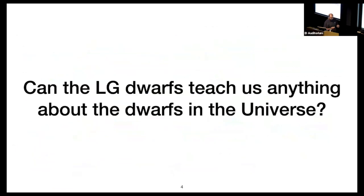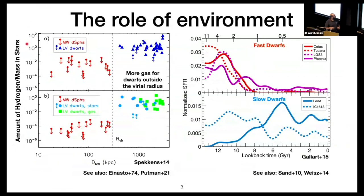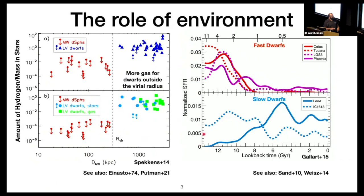Observationally, a lot has been discovered from the local group. On the left, a plot shows the amount of hydrogen divided by stars as a function of how far dwarfs are from the Milky Way. Two populations emerge: those within the virial radius of the Milky Way are gas-void, and those outside seem to have a lot more gas. Star formation histories show two populations: fast dwarfs, which live in denser environments and form a lot of stars early and die out, and slow dwarfs, in isolated environments, which continue to form stars throughout their history.